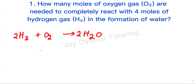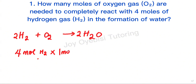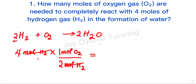Next, we have 4 moles of hydrogen gas given to us. Starting with that 4 moles of hydrogen gas, we are going to convert this to moles of oxygen. There is only 1 mole of oxygen — when there's no coefficient, it means 1. So 1 mole of oxygen on top, divide by 2 moles of hydrogen. The moles of hydrogen cancel out, and your final answer is 4 divided by 2, which gives us 2 moles of oxygen gas.